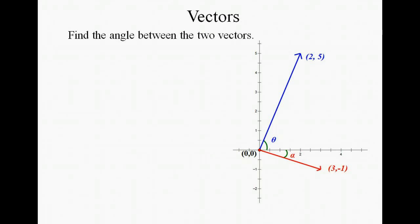Let's start by finding the angle between the two vectors shown here. We have the vector 2, 5 and the vector 3, negative 1.